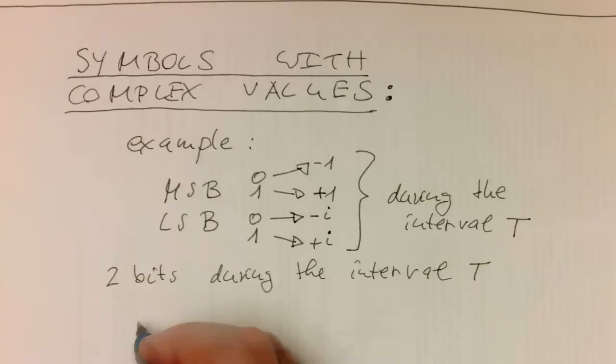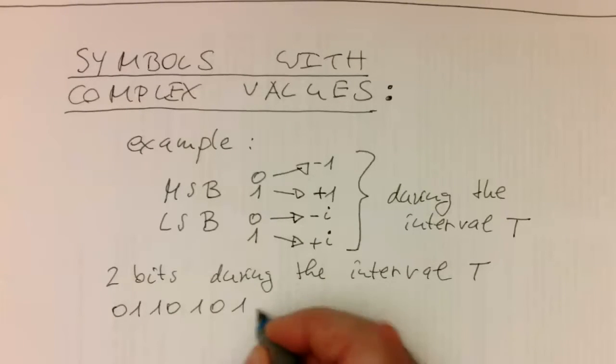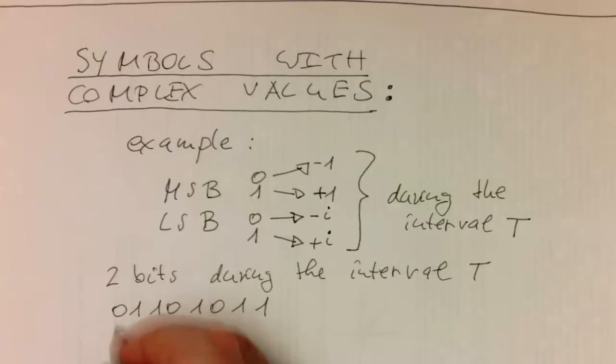Just as an example, let's say we have 0, 1, 1, 0, 1, 0, 1, 1. We chunk it up. So the zero, that's our MSB. This turns into, because it's zero, minus one. The one is plus i. And this gives us one complex number.